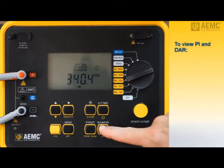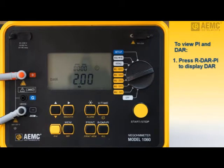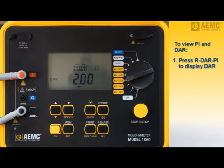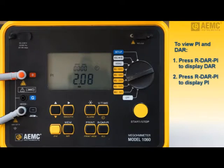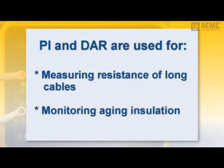To display the dielectric absorption ratio, press R-DAR-PI after the test measurement is complete. This value is derived by dividing the one-minute measurement by the thirty-second measurement. Although DAR is no longer commonly used with newer insulation systems that require longer than one minute of stress before breakdown, it still may have applicability when testing older insulation materials. Press R-DAR-PI again to display the polarization index. The instrument automatically calculates PI by dividing the ten-minute resistance measurement by the one-minute measurement. PI and DAR are useful on long cables or when monitoring the aging of insulation on electrical machines. Measurements of this type can be initially affected by interfering currents from capacitive charges in dielectric absorption; after test voltages have been applied for several minutes, these influences eventually cancel out. So to ensure accuracy, measurements should be performed over an extended period, typically ten minutes or more.